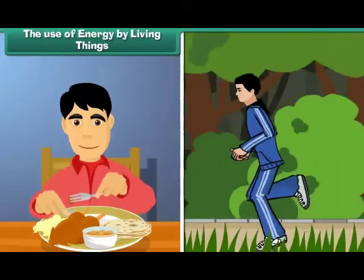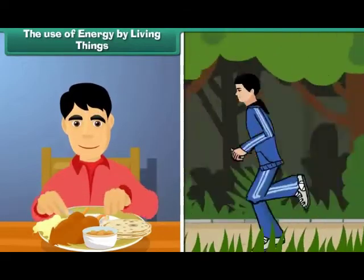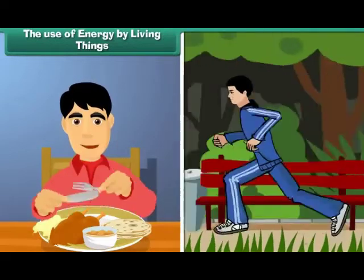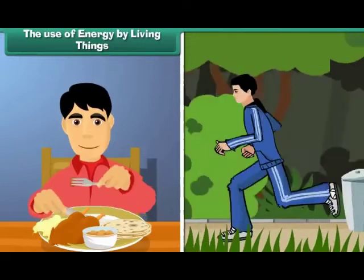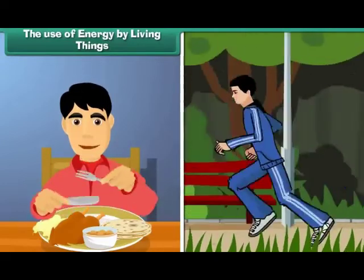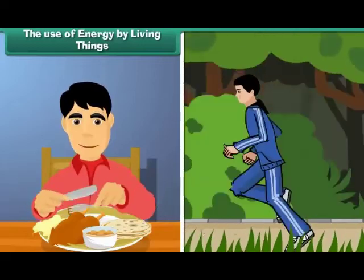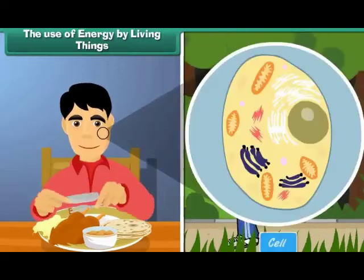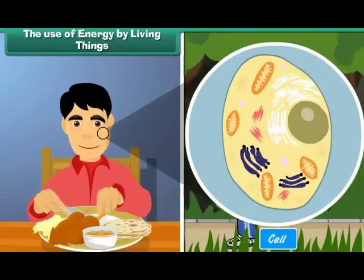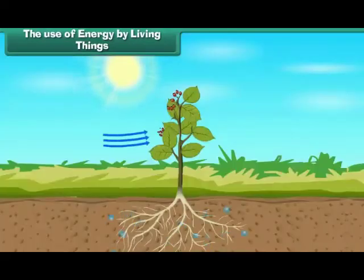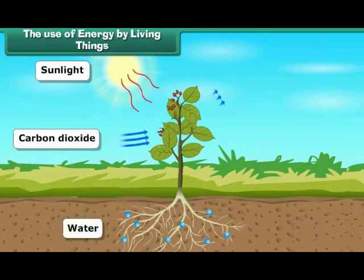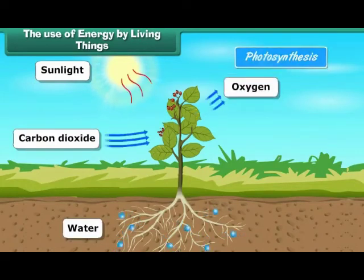Living beings constantly require energy, not only to perform various activities of the body, but also to overcome entropy — the degree of disorder in a system or tendency to randomness. The source of energy is food, required by every cell of the body. Food is prepared by plants through the process of photosynthesis, which requires sunlight, carbon dioxide, water, and chlorophyll.